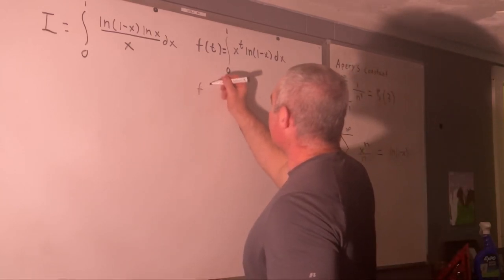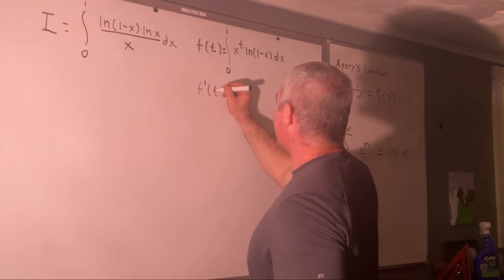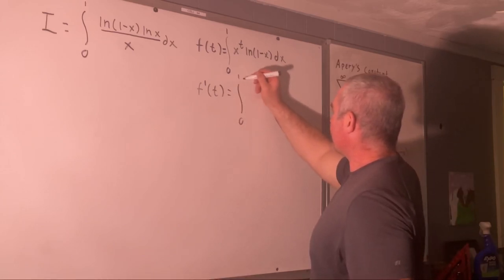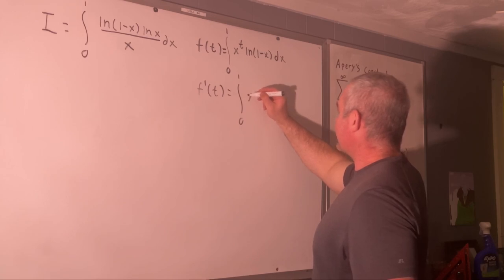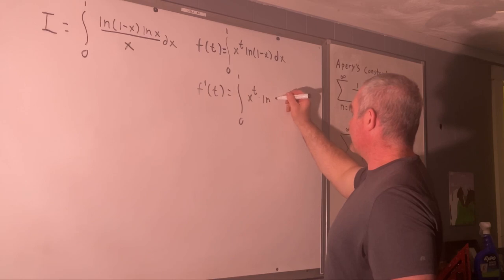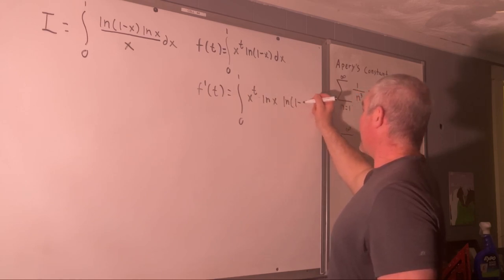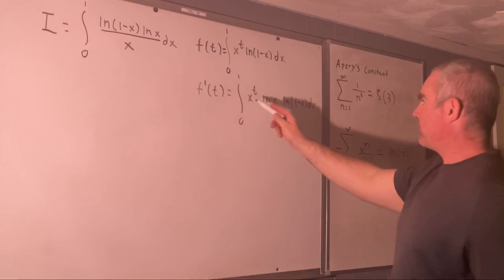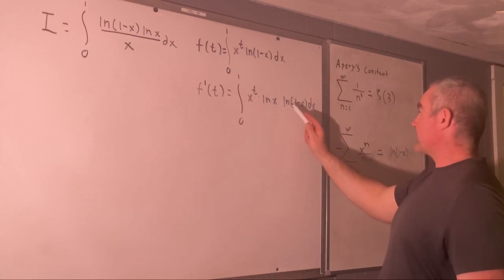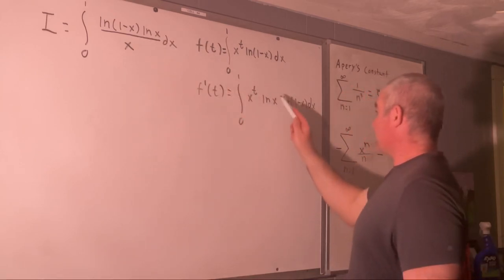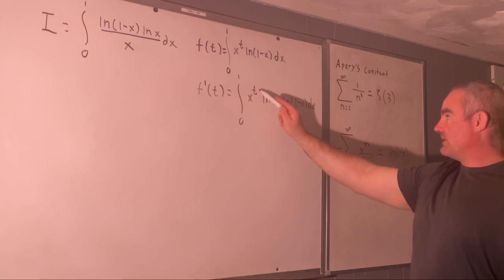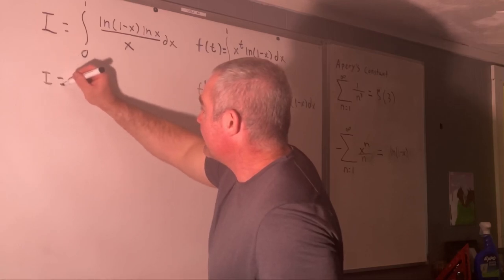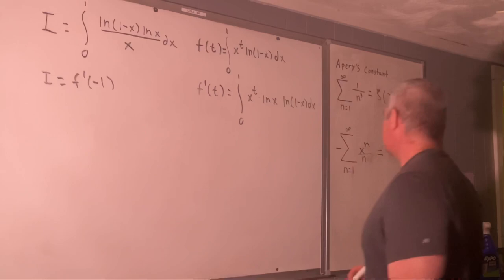If we took the derivative with respect to T using the Leibniz rule for differentiation under the integral sign, let me just state what that would actually be. So, to make it really clear for everybody, F prime of T using the Leibniz rule for differentiation under the integral sign, we would get the integral from zero to one of X to the T natural log X natural log one minus X DX. So, we could see that I is also equal to F prime at negative one because we would have natural log one minus X natural log X and if we put a negative one in for our T, we just get over X.